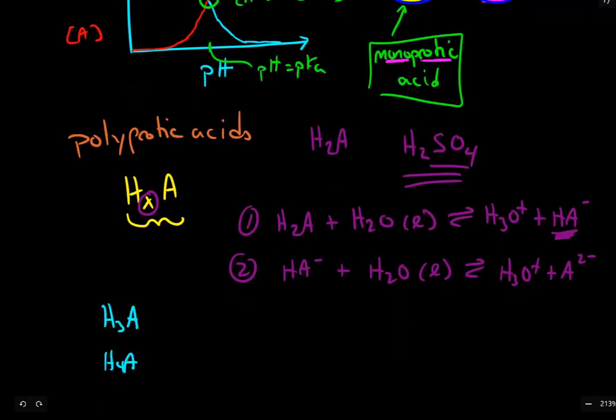For a diprotic acid, we have three distinct chemical species that can occur. We have the diprotic acid, the monoprotic acid that gets formed as a product of the first acid dissociation reaction, and we also have the fully deprotonated form of this molecule. So a diprotic acid has three chemical species.